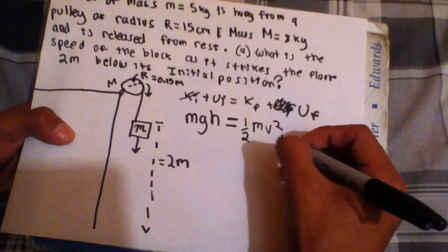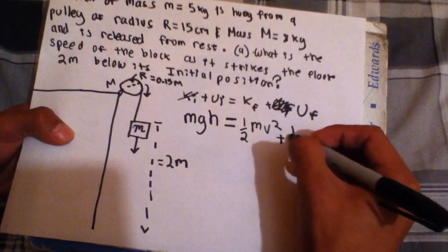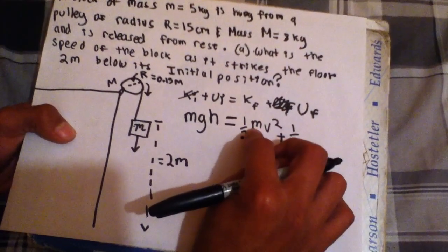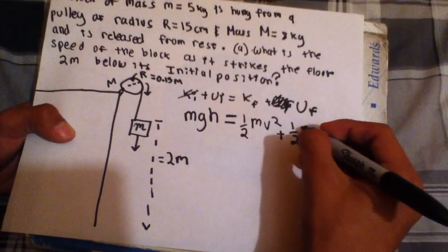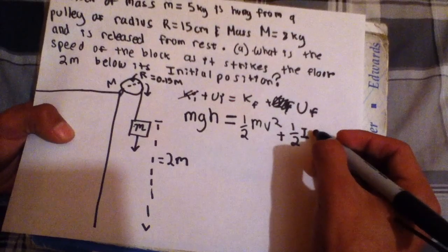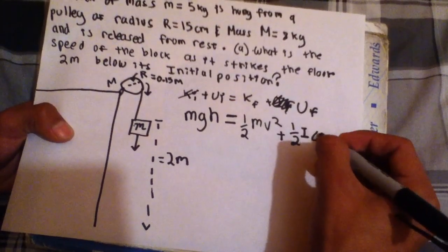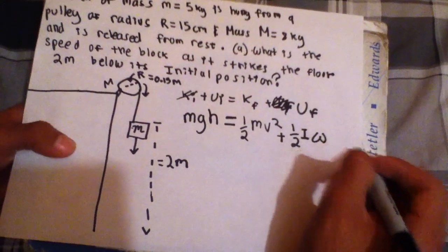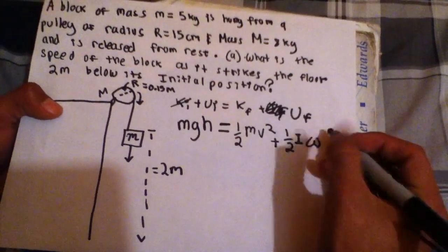And then for the rotational energy, it's one half, not I, but you know the rotational analog for mass is inertia. So it's I, and then not V, but the angular velocity, denoted by this Greek letter, and then squared.